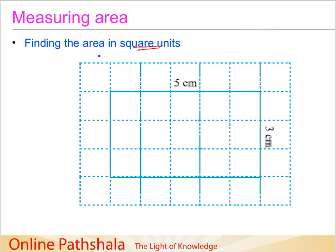We are given this rectangle here which is 5 cm by 3 cm. This is one line and this is 3 cm, and again this is also 5 cm and this is 3 cm. We are supposed to calculate the area, so we have superimposed this rectangle on a grid which has a square size of 1 cm by 1 cm.